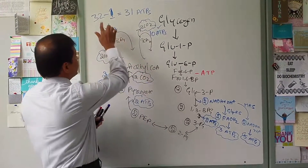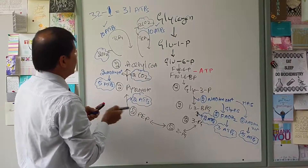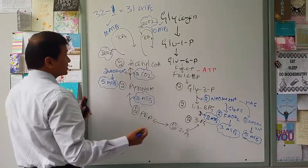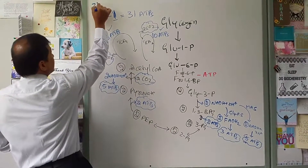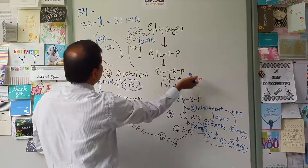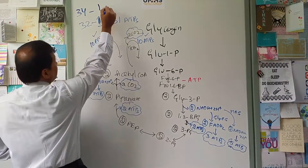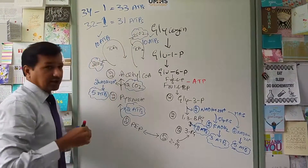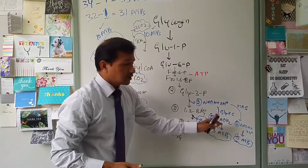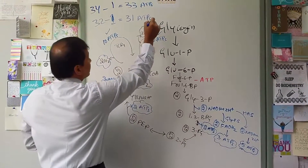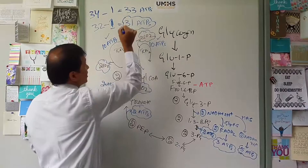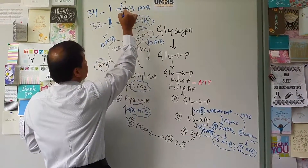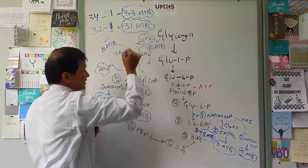With the malate-aspartate shuttle, you add 2 extra ATPs: 32 + 2 = 34, then subtract the 1 ATP consumed, giving 33 ATPs. So depending on the shuttle mechanism: glycerol phosphate shuttle yields 31 ATPs, and malate-aspartate shuttle yields 33 ATPs from glucose-1-phosphate coming from glycogen.